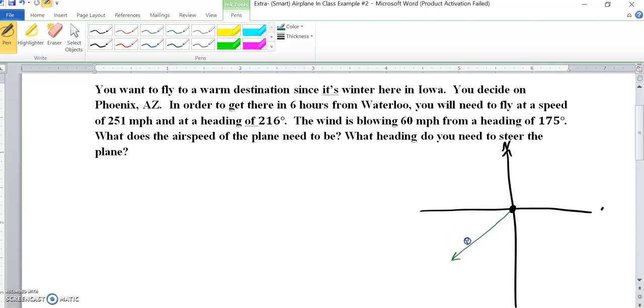That's our P plus W. And right here is going to be Arizona. That's a map direction. 216 degrees. So, 216 degrees.